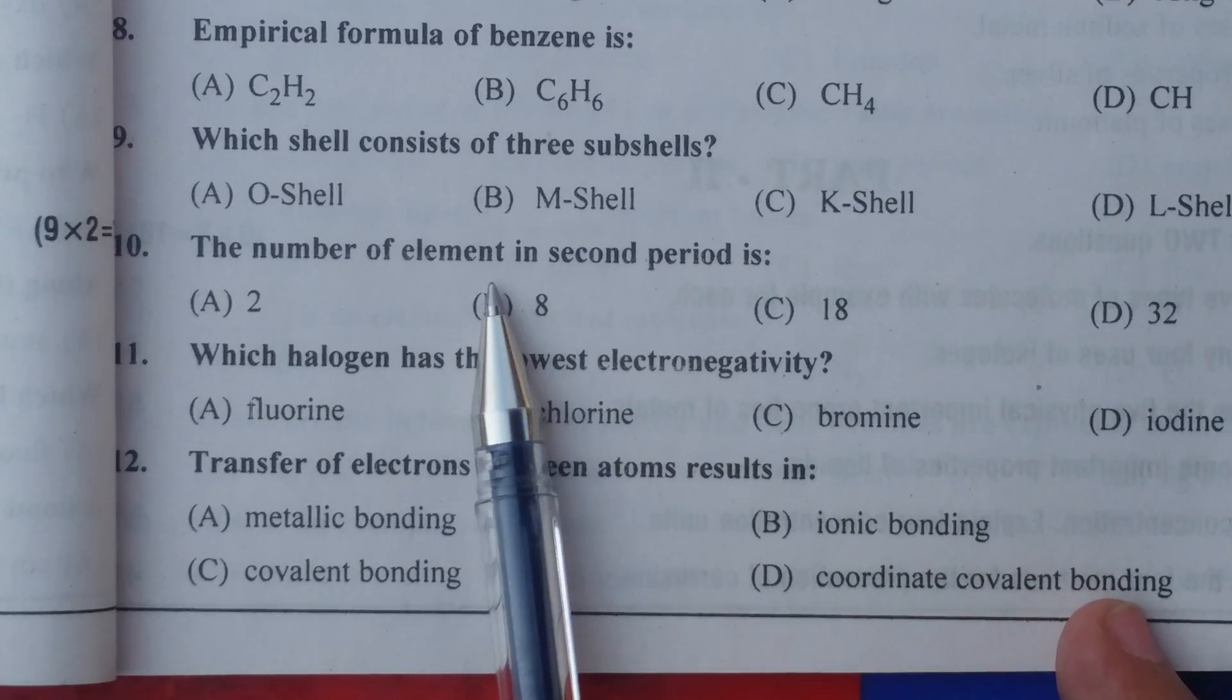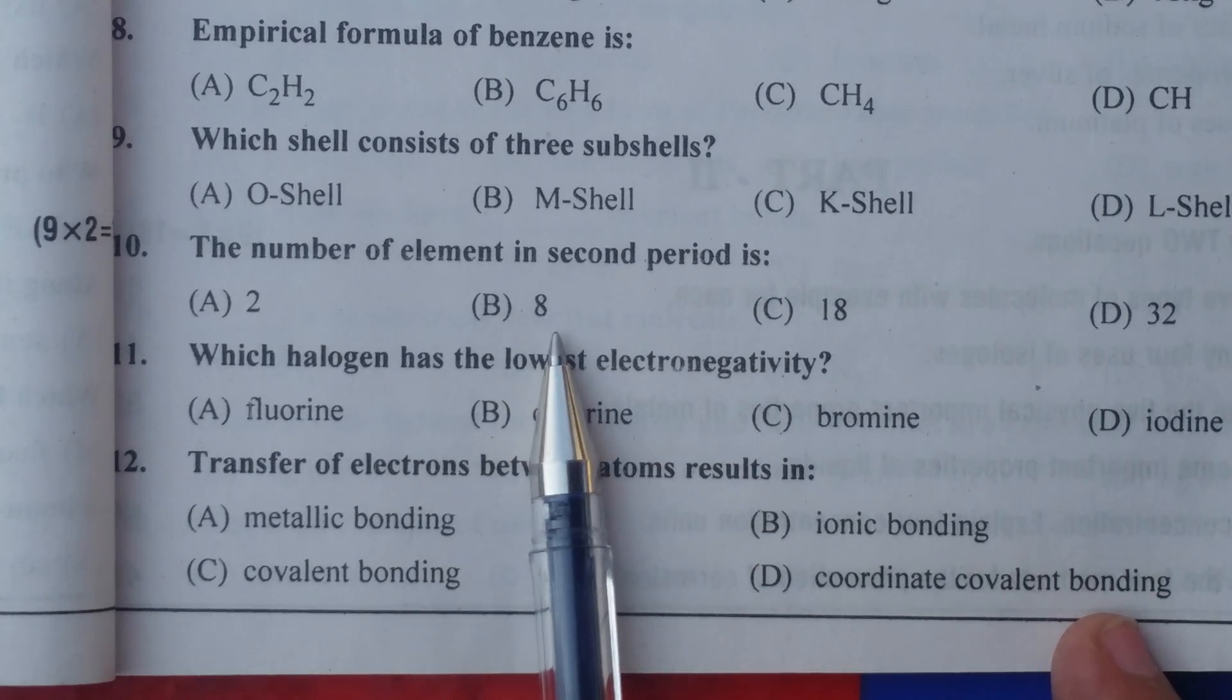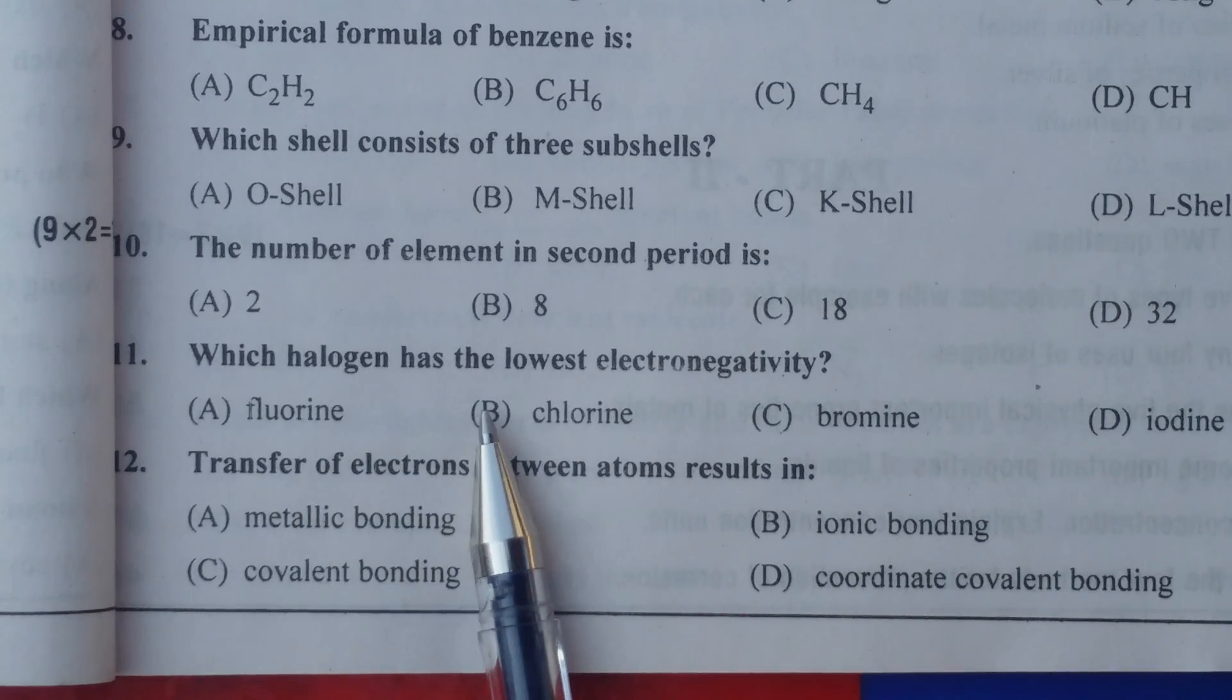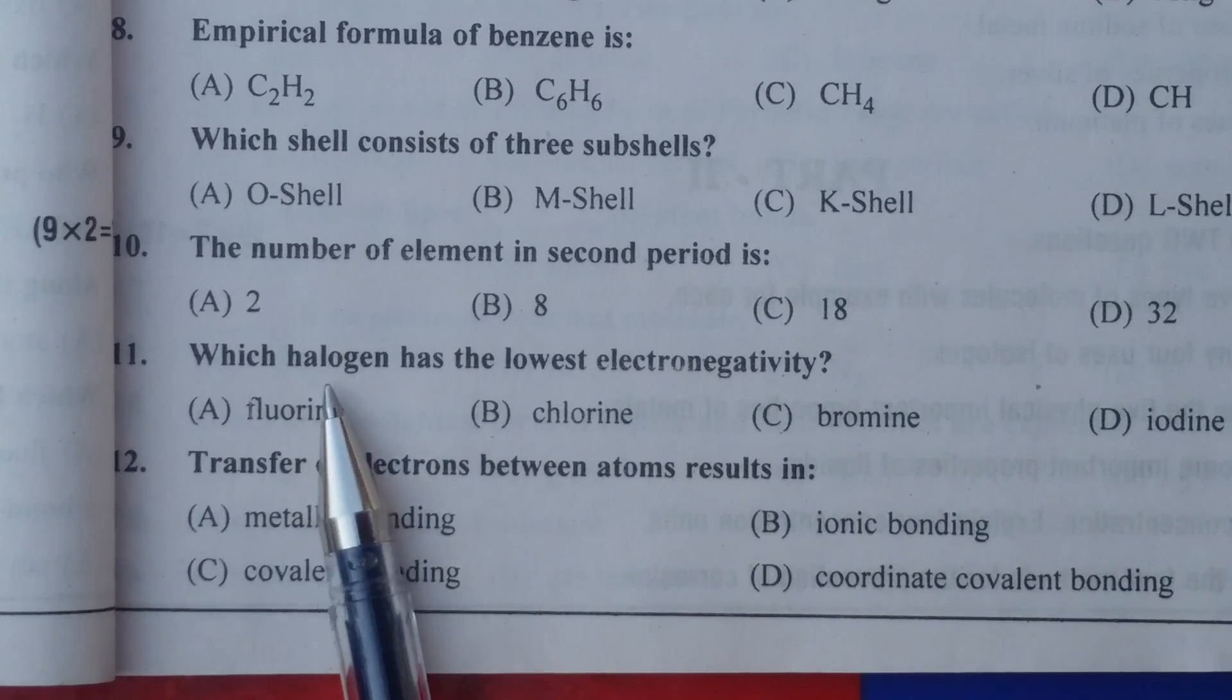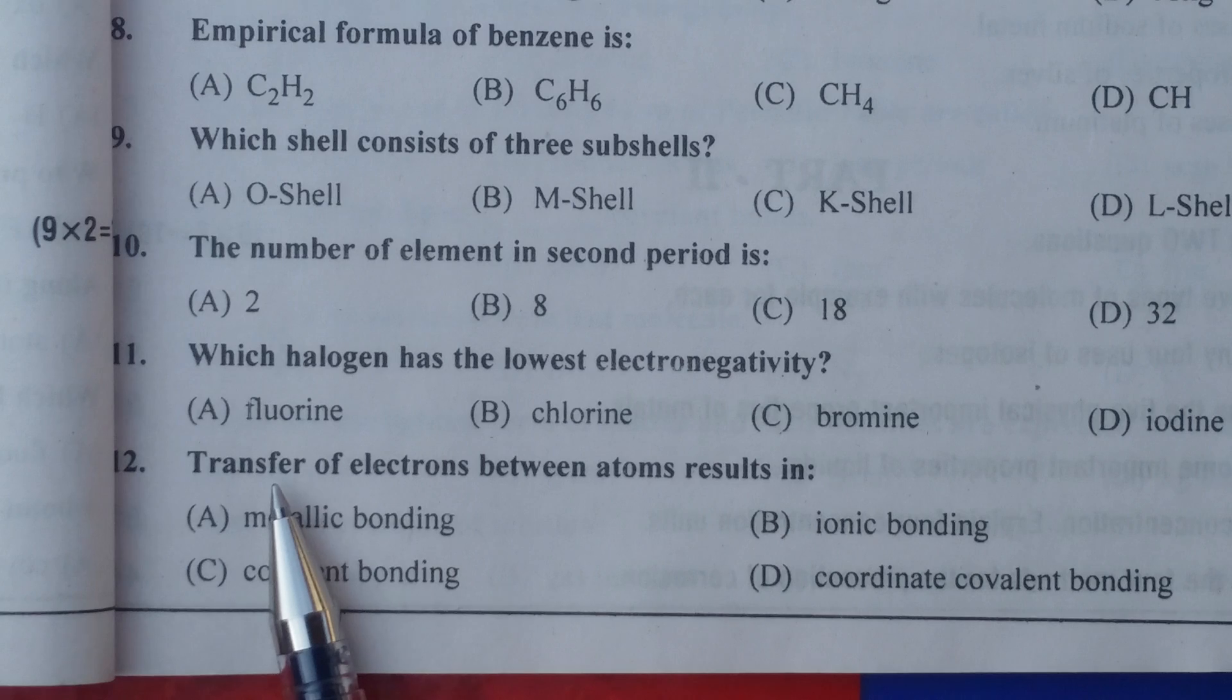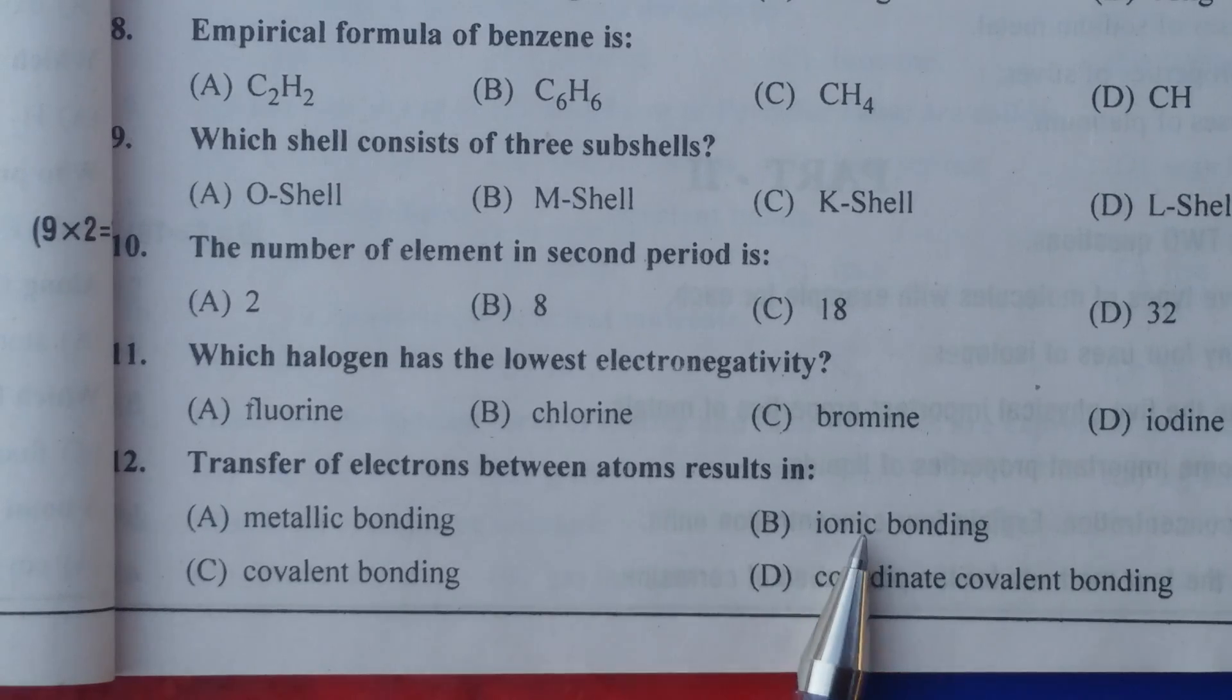The number of elements in second period is eight. Which halogen has the lowest electronegativity? Iodine. Transfer of electrons between atoms results in ionic bonding.